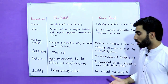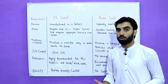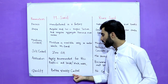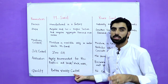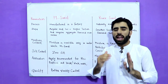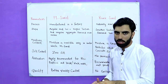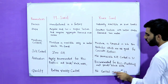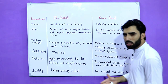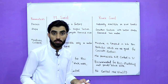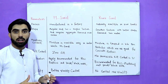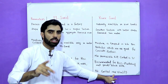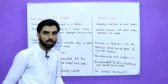The last parameter is quality. M-sand has better quality control every time because it is manufactured in a company or factory. River sand, however, has no control over quality because it depends on different types of rivers, so there is no control over the quality of river sand.